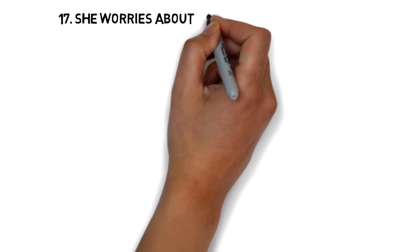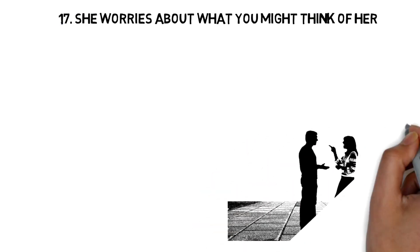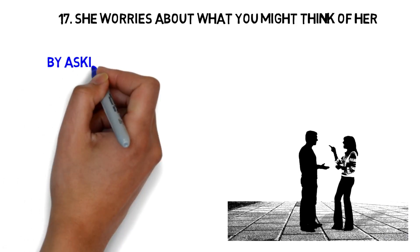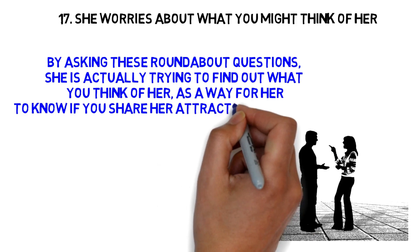17. She worries about what you might think of her. When you talk and you talk about yourself, you may have noticed that she seems concerned about the image you have of her. A subtle woman translates this into phrases such as, Do you think I am too? Do you think I should have? By asking these roundabout questions, she is actually trying to find out what you think of her as a way for her to know if you share her attraction and feelings.